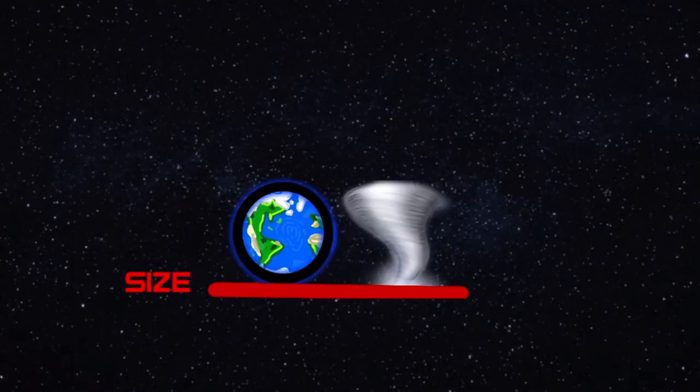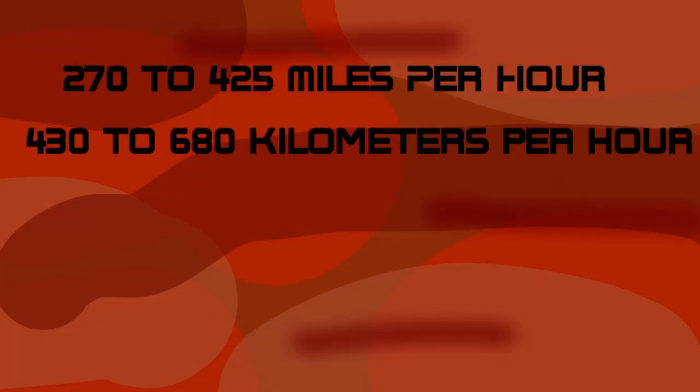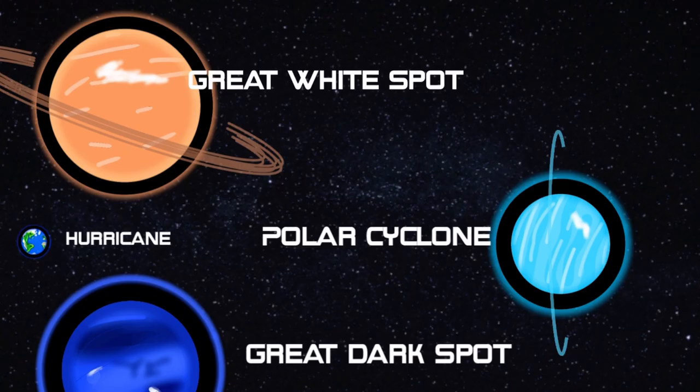Right? Oh, wait. You're saying that it's bigger than Earth? Really? Yup. The winds in this storm can go up to from 270 miles per hour to 425 miles per hour. Also, other planets also have some storms.